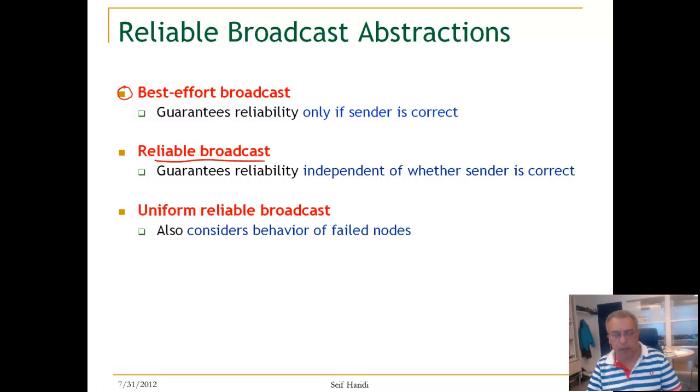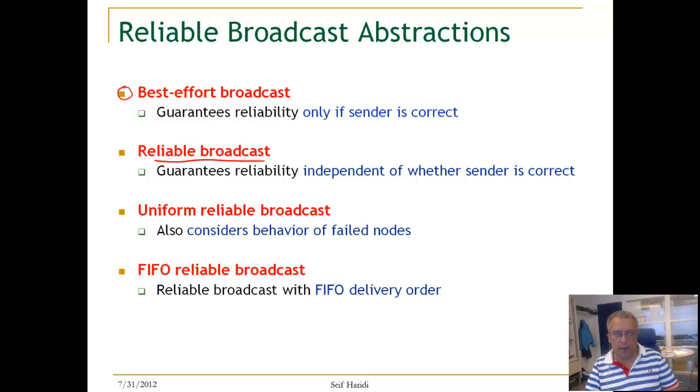We are going also to look to even a more stringent form of reliability, which called uniform reliable broadcasts, which considered whether a node delivers the broadcasted message and then failed. What happens to the other nodes? Did they deliver the message or not? Until now multiple broadcast messages coming say from the same source could be delivered in any arbitrary order. We are also going to look to FIFO reliable broadcasts where messages sent from a single source will be delivered in the same order.